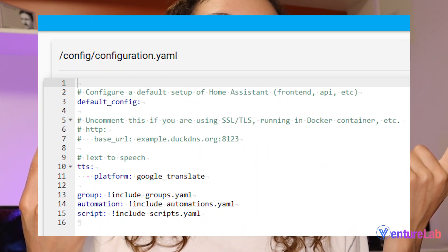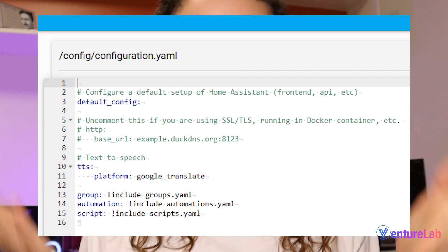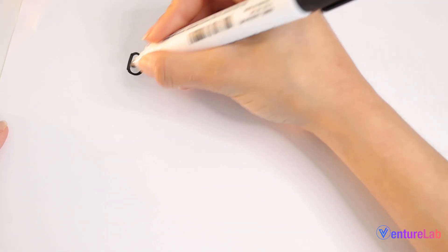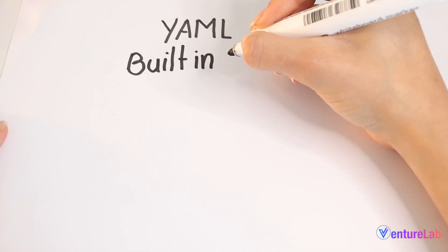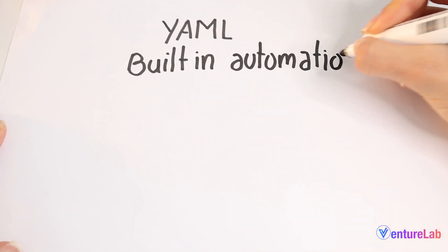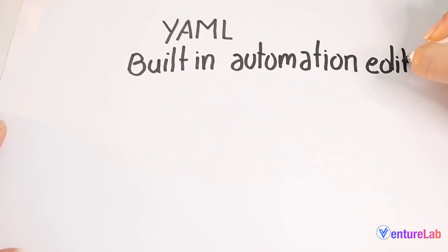If you know a little bit of Python and you know the YAML files, your experience with Home Assistant will be a little bit better. If you don't want to write the automation rules using YAML, you can also use the built-in automation editor.